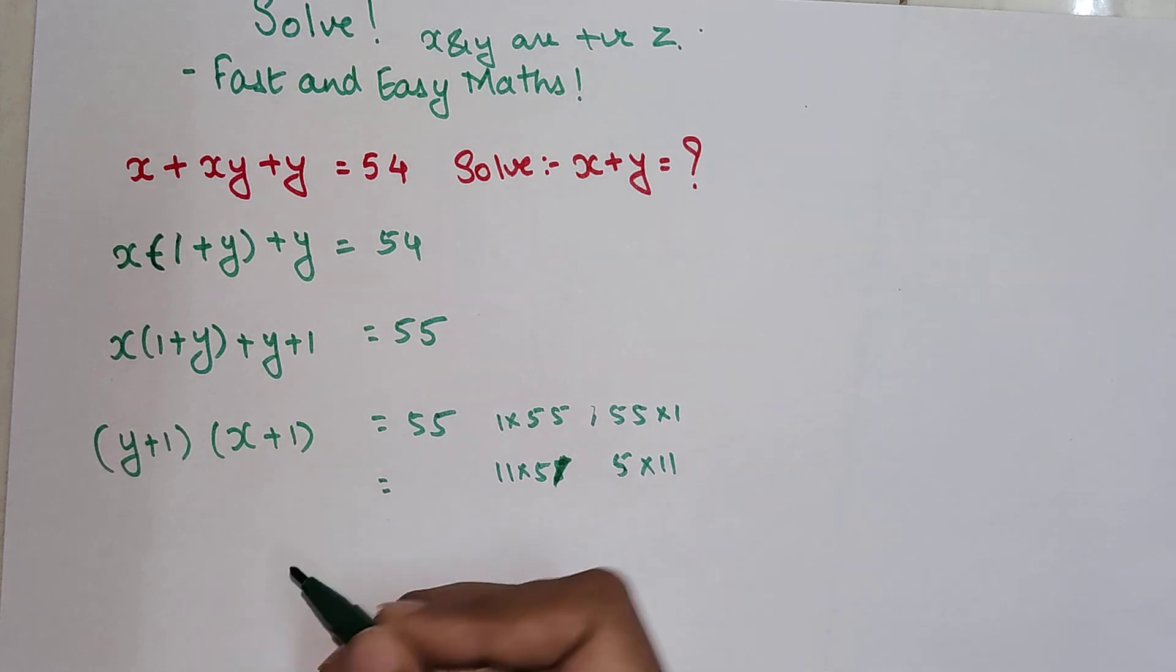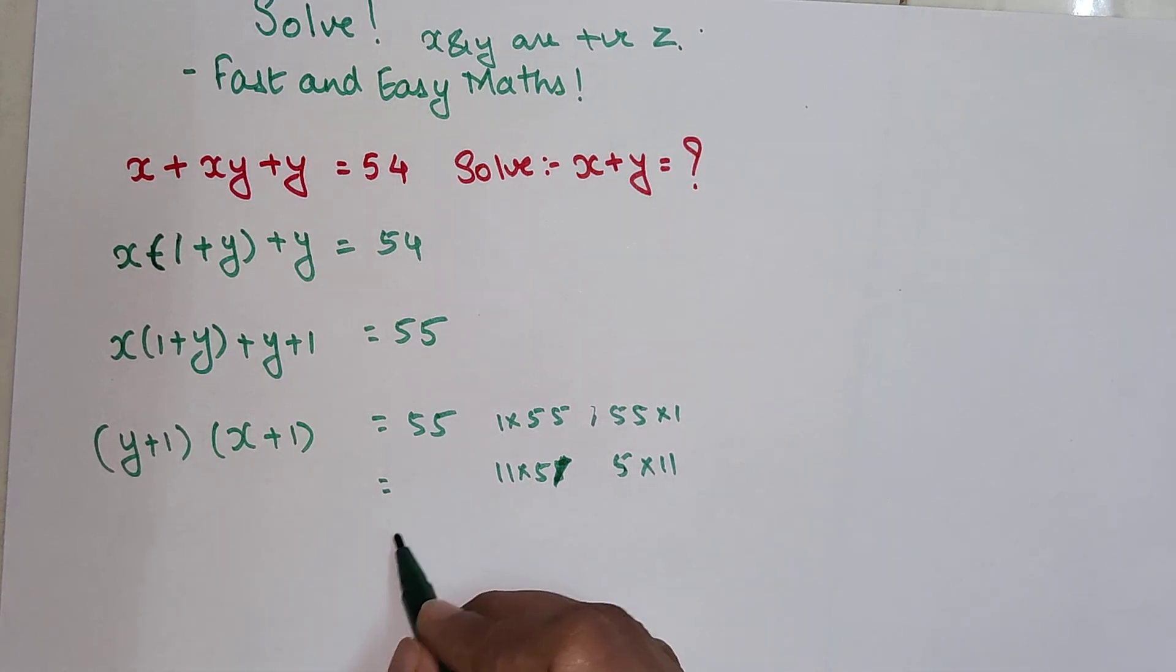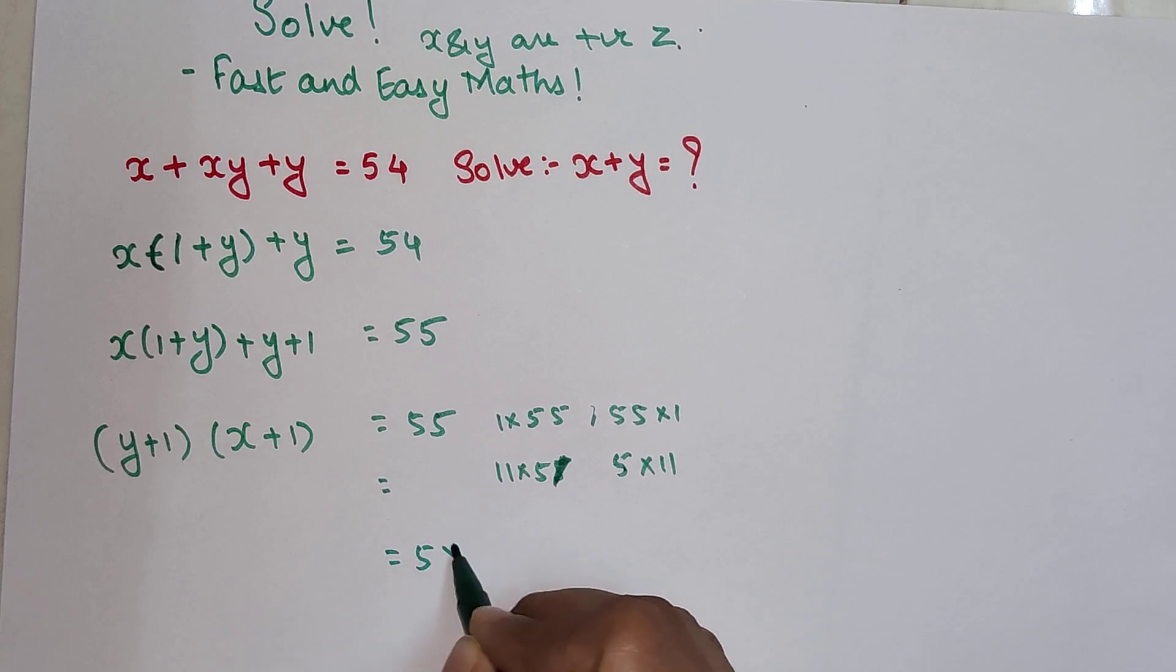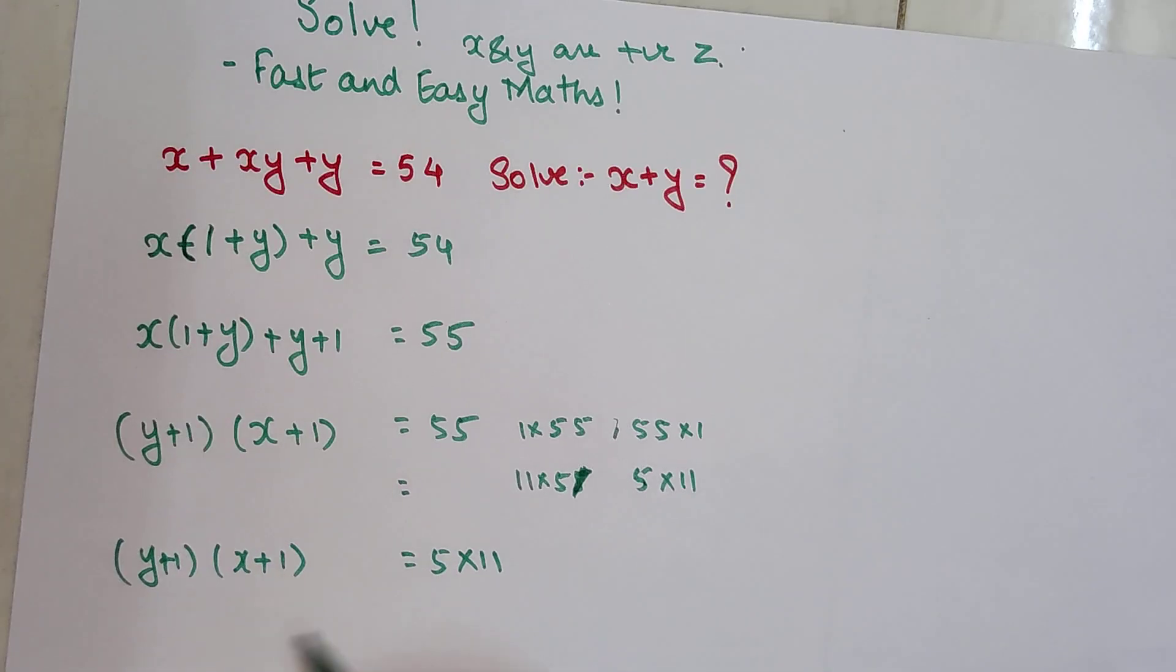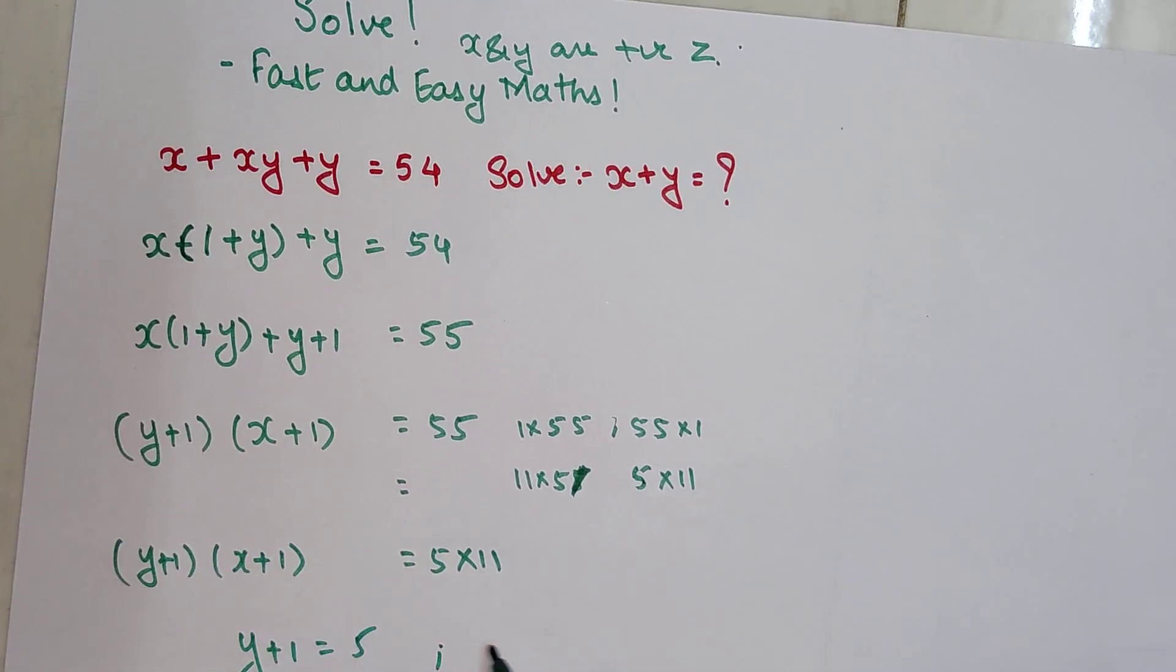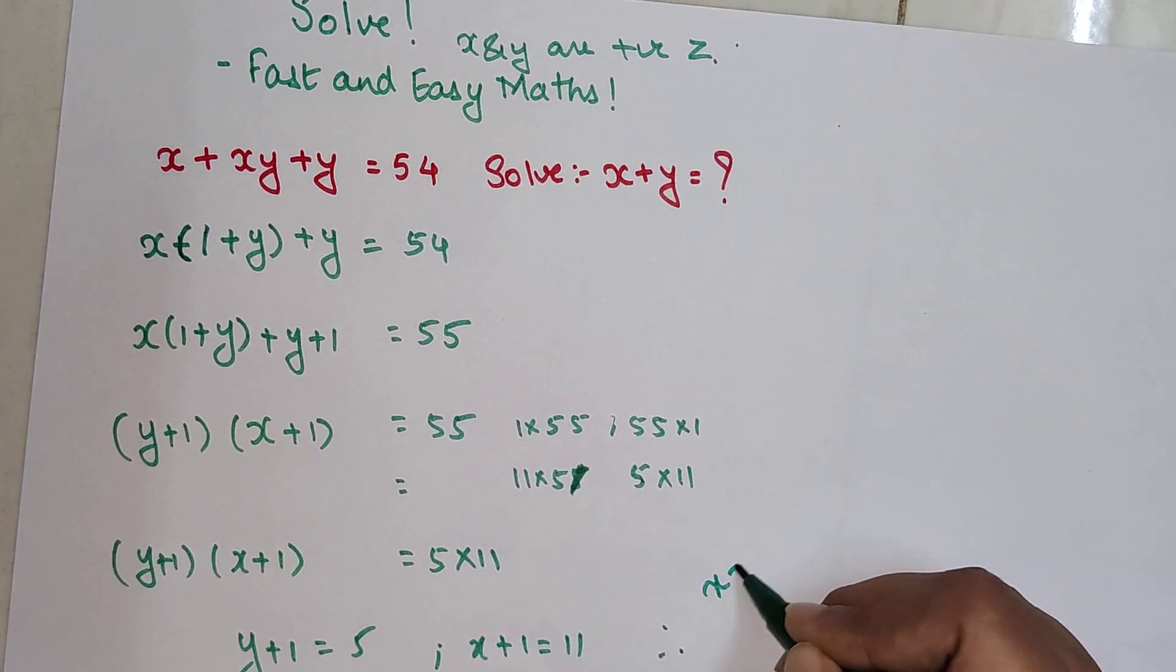So we can write anything. Let's take this as 5 × 11. So we have (y + 1) the first bracket and the next bracket is (x + 1). So I can say y + 1 = 5 and x + 1 = 11. From here I can say y = 4, x = 10. Therefore, I can say x + y is equal to 40.